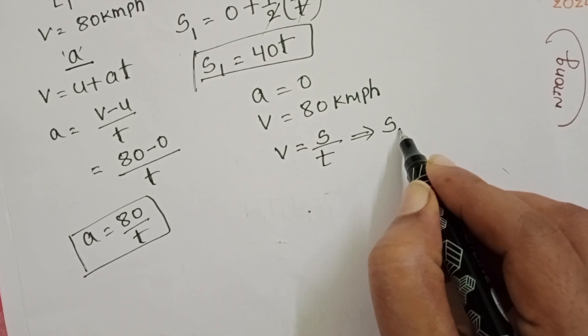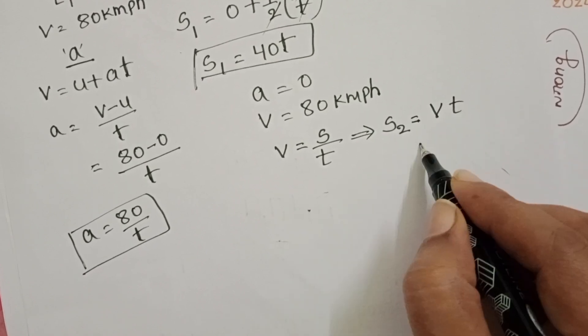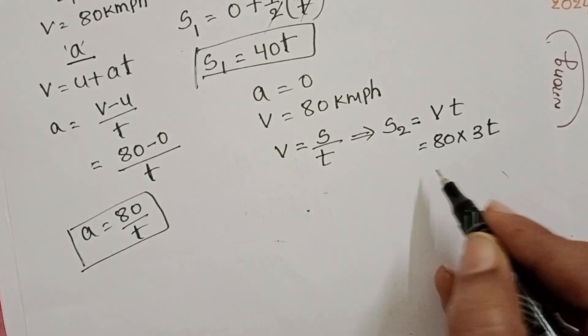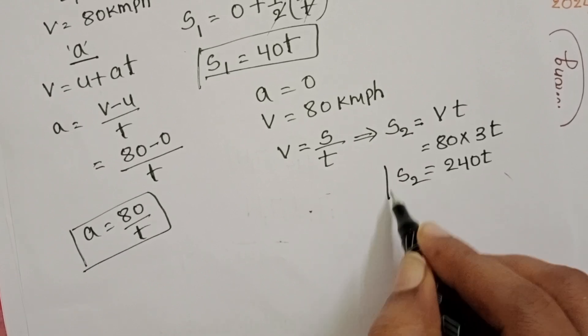From this, distance S2 is equals to speed into time. Speed is 80 and given time 3T. 240 T. This is S2.